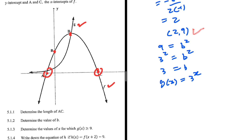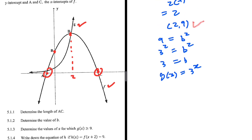5.1.3: determine the values of x for which g of x is greater than or equal to 9. We don't need to calculate much here. When x equals 2, g of x equals 9. When x equals 3, g of x equals 27. When x equals 1, g of x equals 3. So we can clearly see that g of x is greater than or equal to 9 when x is greater than or equal to 2.